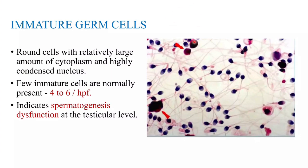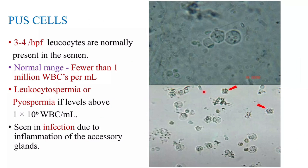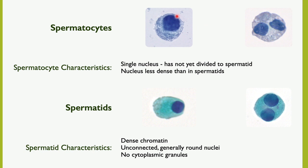These are the immature round cells in the smear. They have a relatively large amount of cytoplasm and a condensed nucleus. Around 5 to 6 immature cells per high-power field are considered normal. Pus cells up to 5 per high-power field are also taken as normal. These spermatocytes have a single nucleus that has not yet divided into spermatids; the nucleus is less dense compared to spermatids, which have dense chromatin and no cytoplasmic granules.